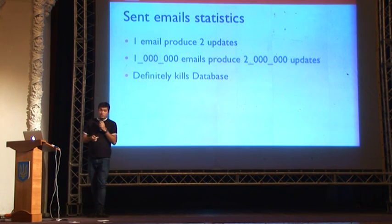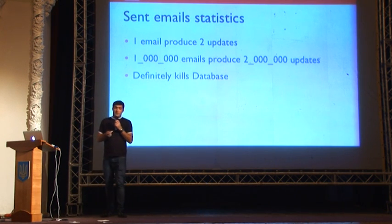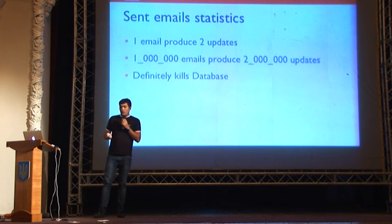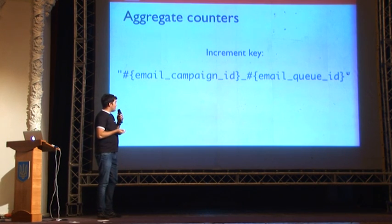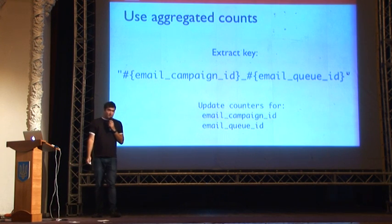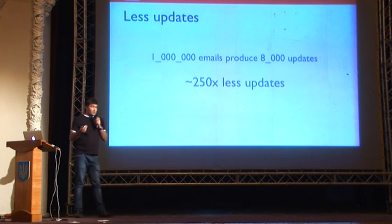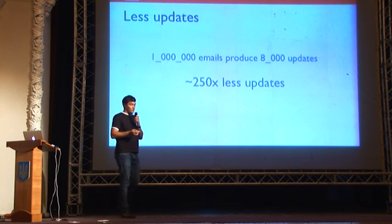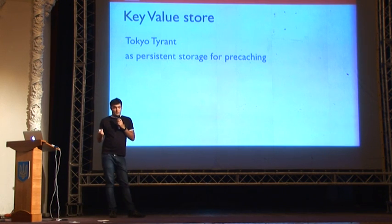For statistics, one email produces two database updates, so one million emails produces two million updates — which would kill our database. We decided to use aggregate counters: composing a key using email campaign ID and email queue ID, aggregating the counter, and having an update daemon extract the key and perform SQL updates. This reduced the count of updates by 250 times. To cache these counters, we chose Tokyo Tyrant as our key-value store.